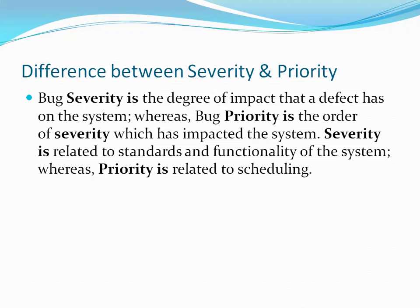Next was the difference between severity and priority. Severity is the degree of impact that a defect has on the system, whereas bug priority is the order of severity which has impacted the system. A follow-up question can also be asked, like give an example of high severity low priority, or vice versa — low severity high priority.